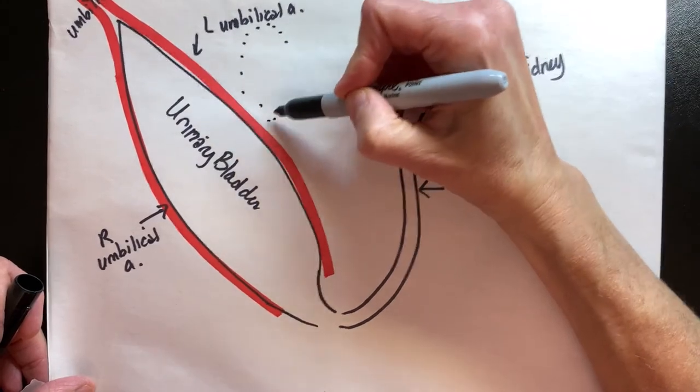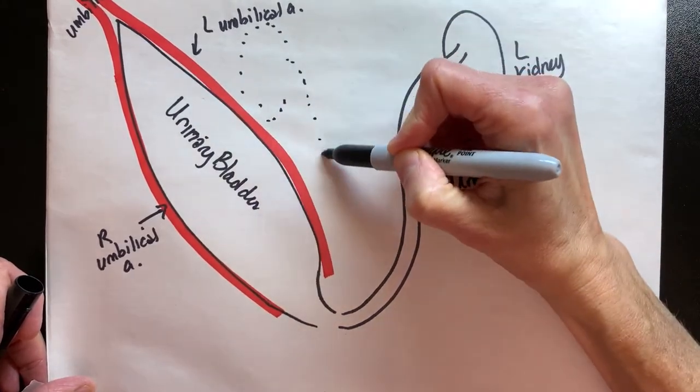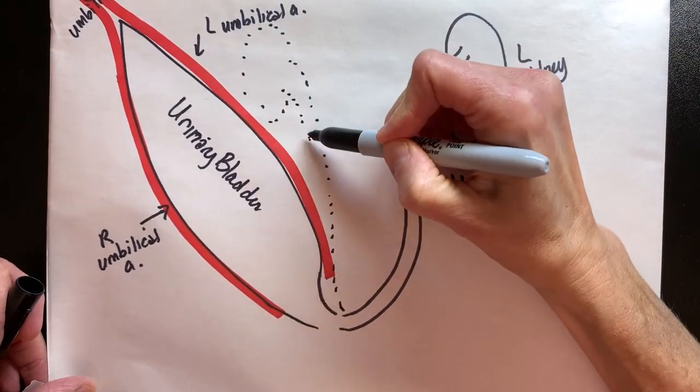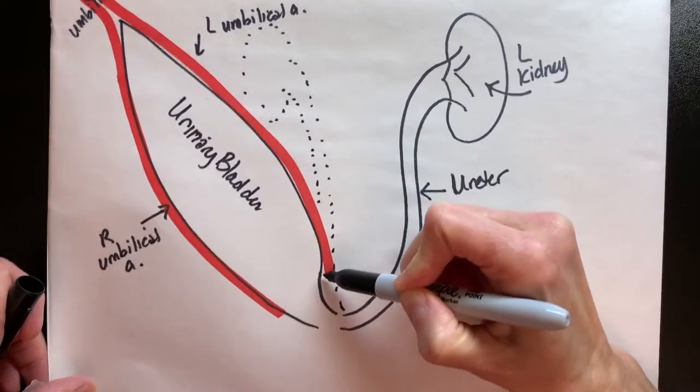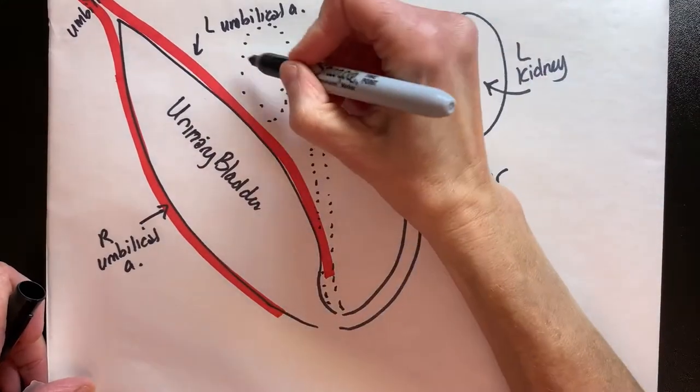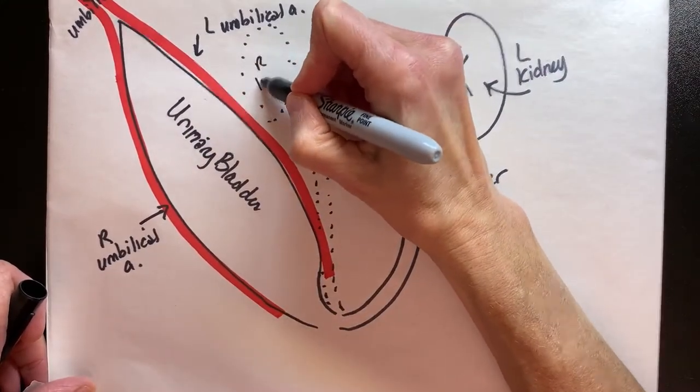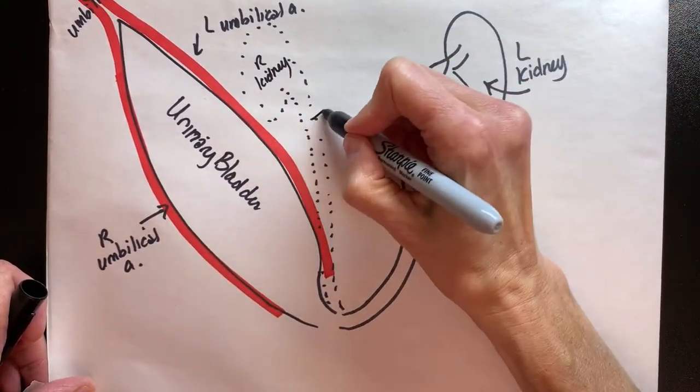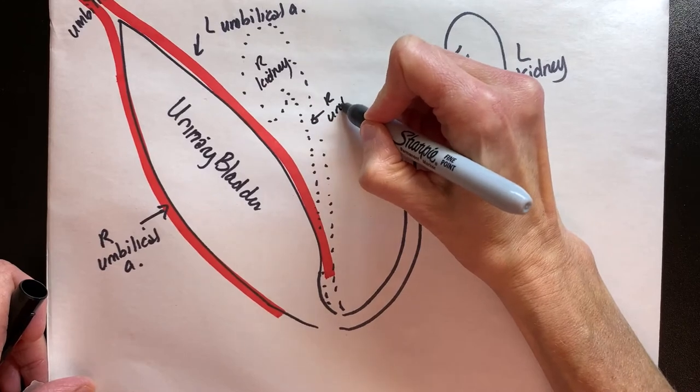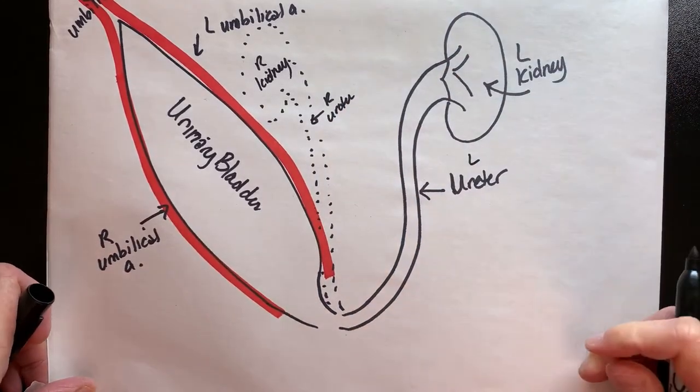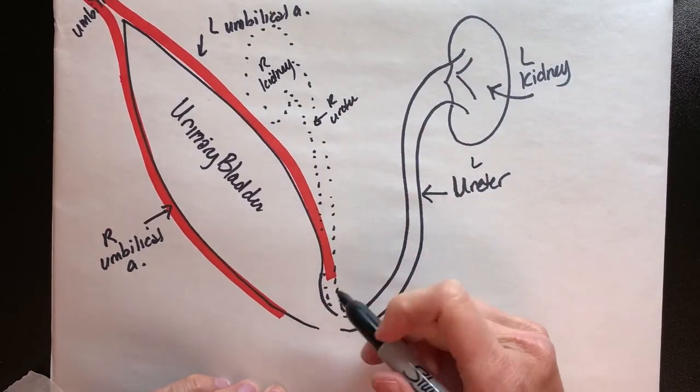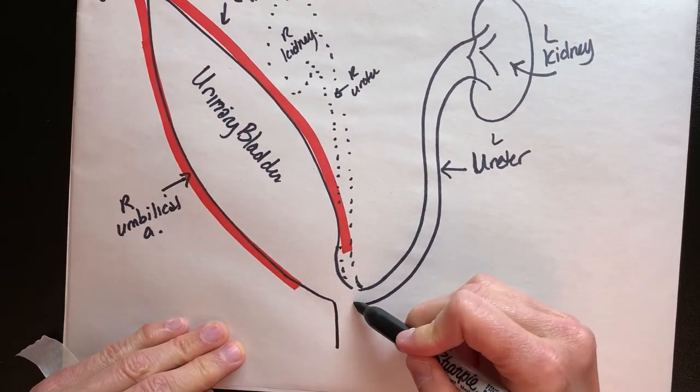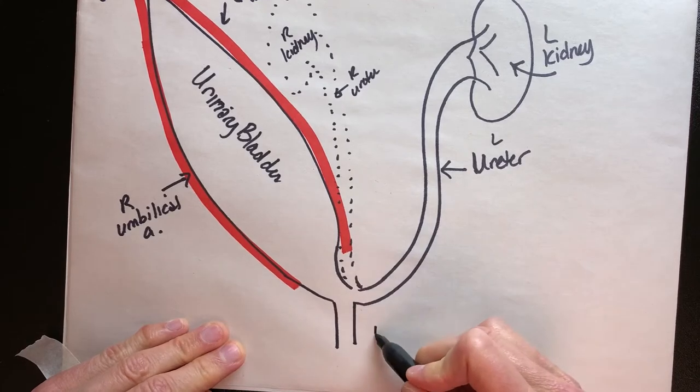I'll just draw a ghost kidney over here so you're not thinking that pigs only have a left kidney. We have a right kidney as well as a right ureter. Those two enter the bladder and then drain through the urethra.